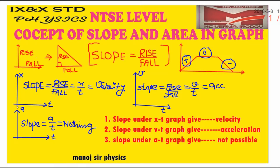First of all, when you have the position-time graph, how do you calculate the slope? Rise means displacement, fall means time. Displacement upon time will give you velocity.